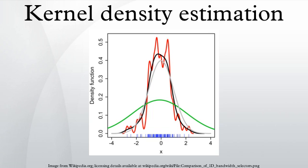The construction of a kernel density estimate finds interpretations in fields outside of density estimation. For example, in thermodynamics, this is equivalent to the amount of heat generated when heat kernels are placed at each data point location. Similar methods are used to construct discrete Laplace operators on point clouds for manifold learning. Kernel density estimates are closely related to histograms, but can be endowed with properties such as smoothness or continuity by using a suitable kernel.